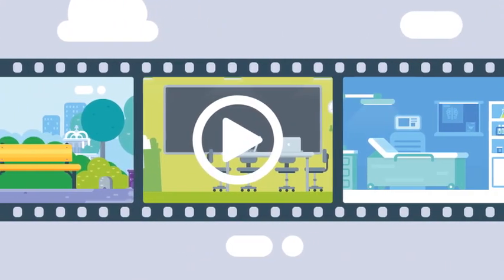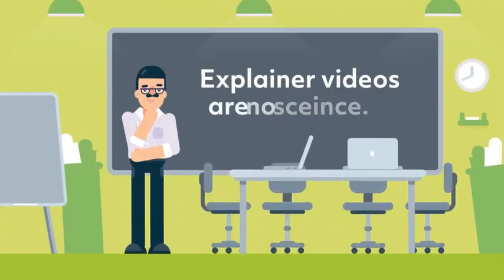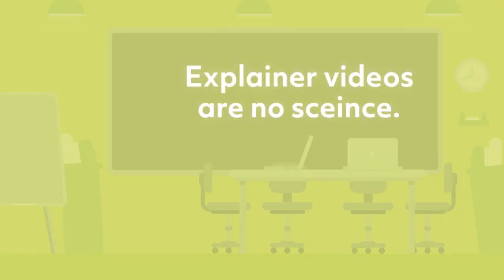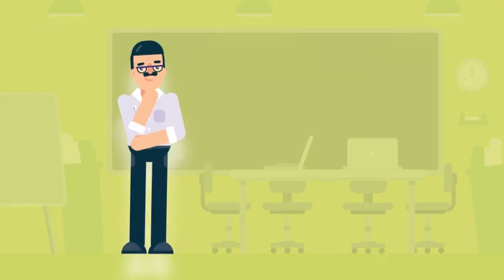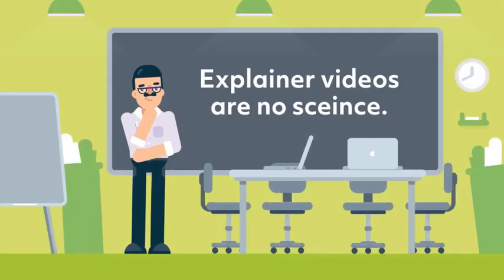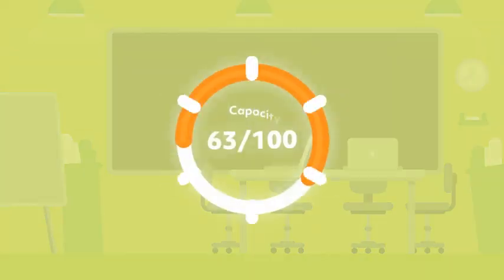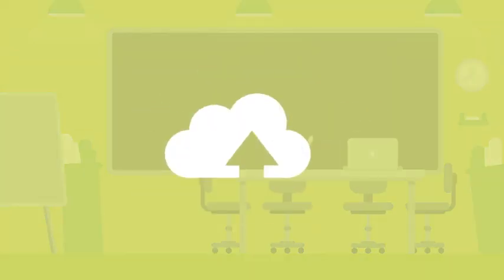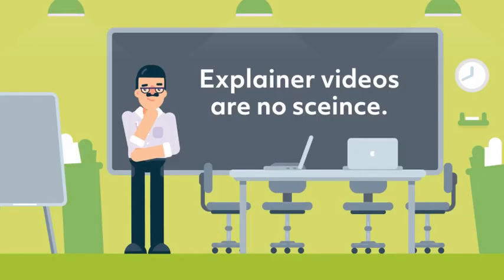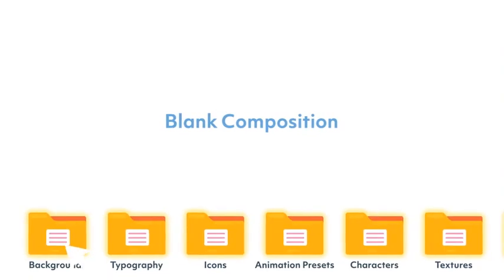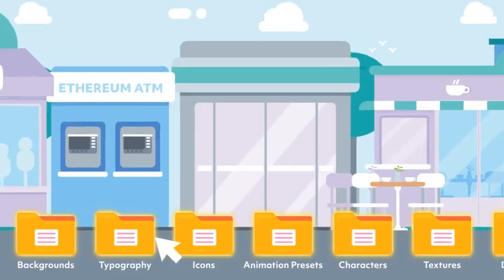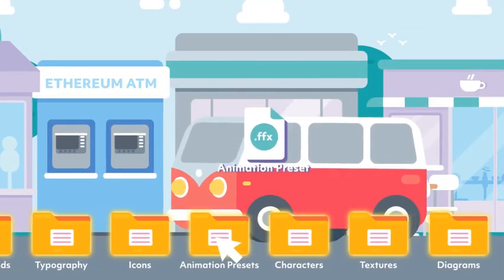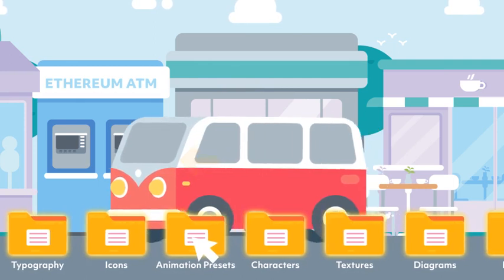Every video is composed of scenes, and every scene needs a background, text, and characters, among other things. The Toolkit has all these elements, so you won't have to create everything from scratch. Build your scene to look exactly how you want, using the versatile elements in After Effects.